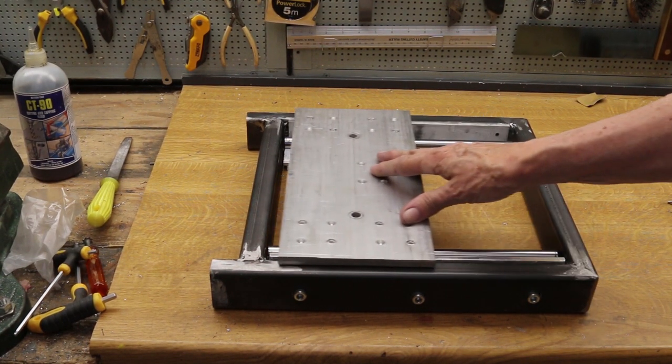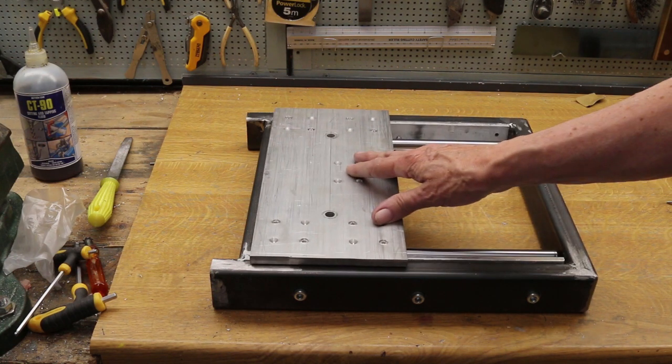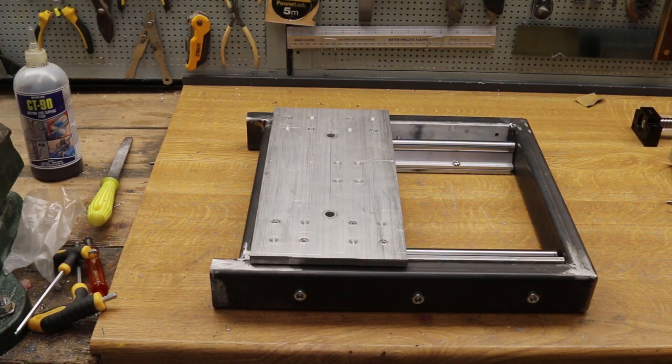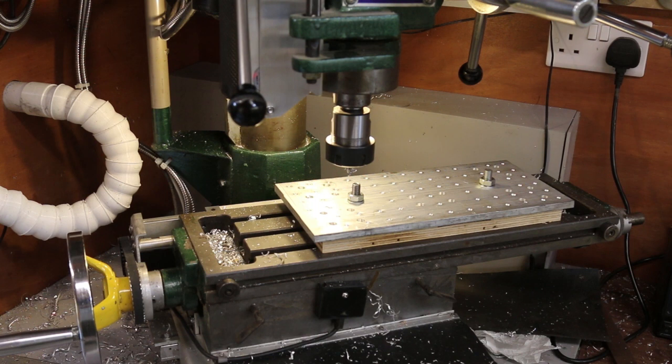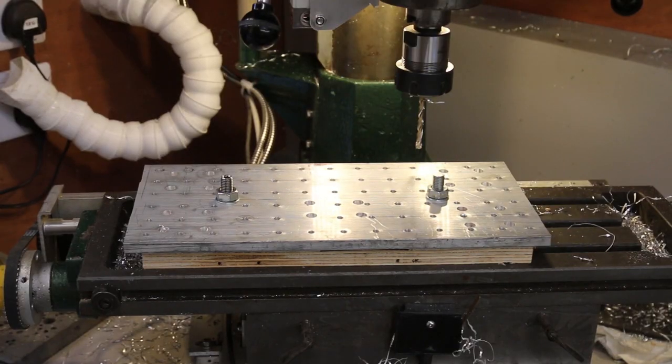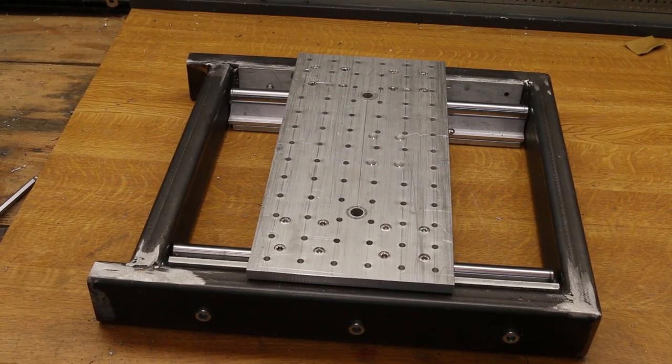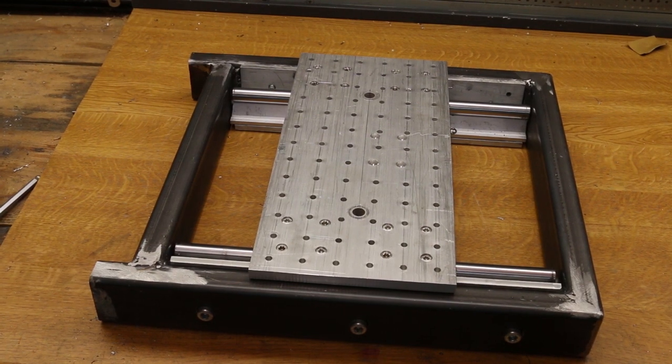Bolted to the blocks, the action is nice and smooth from one end to the other. With that okay, it's time to go back in the mill and spot for that matrix of threaded holes, and then the tapping size holes. Threading the holes can come later. For now I want to mount the ball screw.